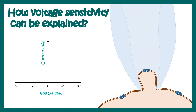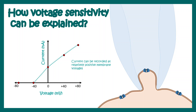Let's understand the gating kinetics by looking at electrophysiological data. Under a whole-cell patch clamp configuration we can clamp the voltage to specific magnitudes and record the current. Holding at minus 80 millivolts, the current is zero; at minus 40 it is still zero; at 0 millivolts there is some current, and it increases as voltage becomes more positive. This IV characteristic tells us that current can be recorded from this ion channel only at relatively positive membrane voltages.